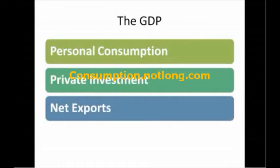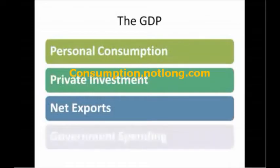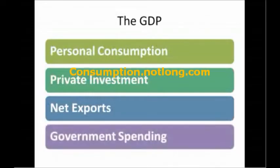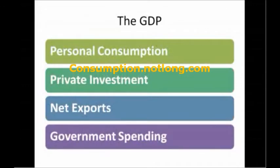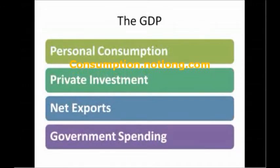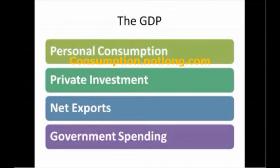This brings us to the last factor in GDP, which is government spending. The Obama administration has flooded the economy with an economic stimulus package. This money, along with spending on Social Security, Medicare, Defense, and other government programs, makes up the government spending component of GDP.